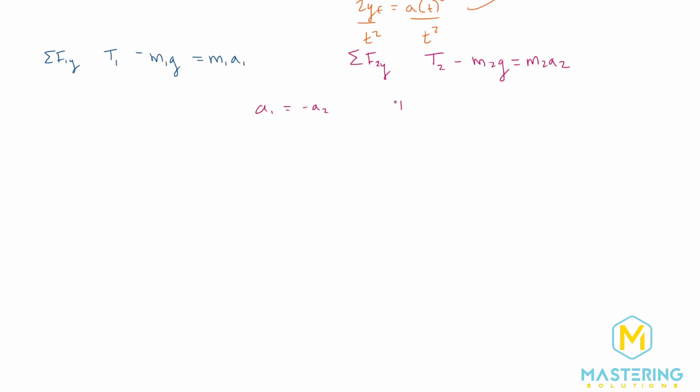So that means the acceleration for block 2 is going to be negative, and they're equal to each other. Same thing with the tension. The tensions will be the exact same. So tension 1 is equal to tension 2. So now let's look at the equation right here for block 2.